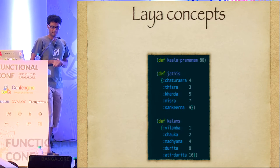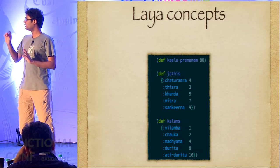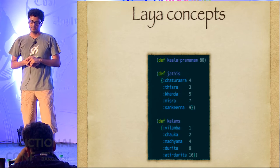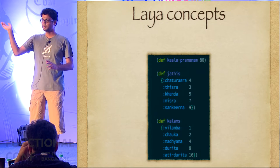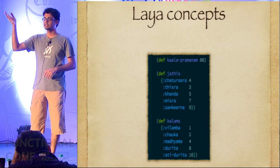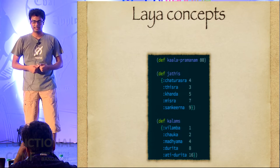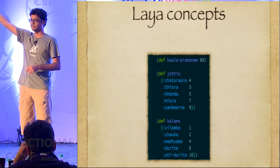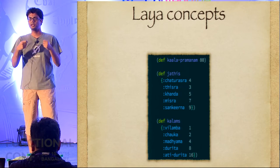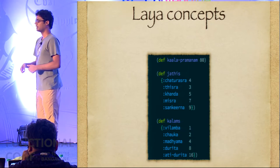That brings us to Laya. Kala Pramanam is basically tempo. Jatis are basically time signatures in western music - so these are like 4/8, 5/8, 7/8 and 9/8. And Kala are basically speed. Given a particular tempo, you can go double speed or quadruple speed and so on. Given that these abstractions exist, let's go ahead and do a demo of what we have so far.